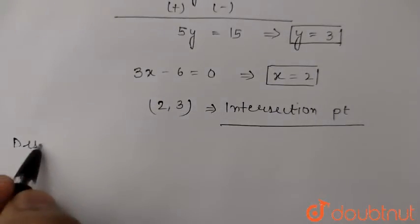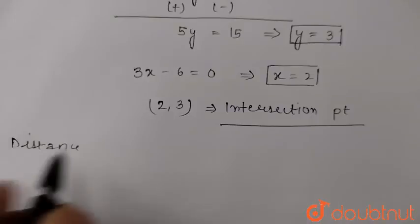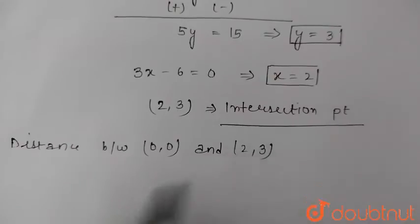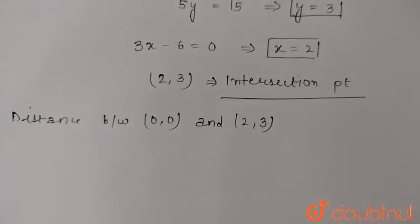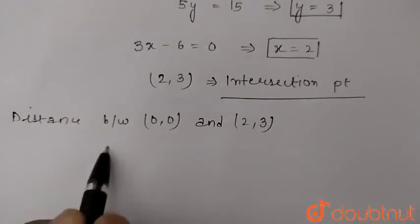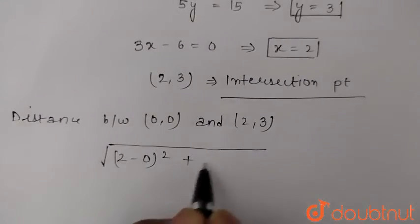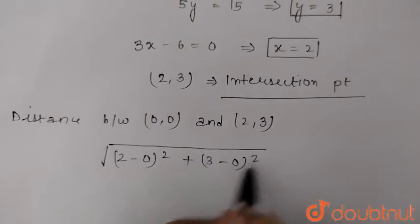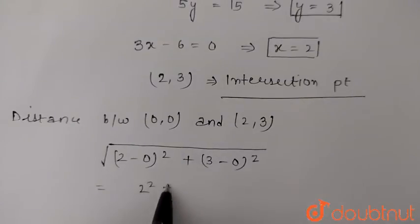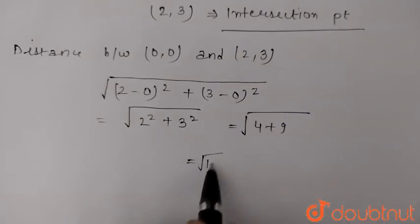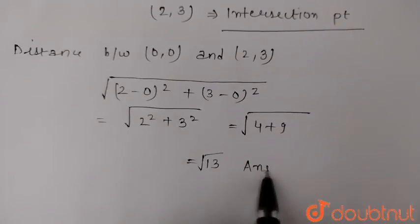Using the distance formula, we can find the distance between (0,0) and (2,3). Using the formula square root of (x2 minus x1) squared plus (y2 minus y1) squared, we get (2 minus 0) squared plus (3 minus 0) squared, which equals square root of 4 plus 9. So our answer is root 13, which is our final answer.